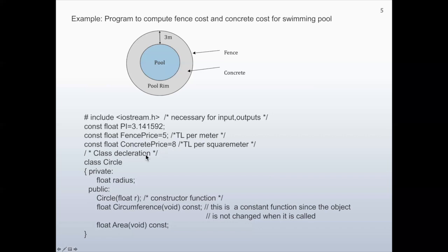In the class declaration, we first write the name of the class — circle. The keyword class is a reserved word, followed by the name of the class. In the private part, we have radius, which is a floating number representing the radius of the pool. In the public part, we have circle — this is the constructor. It has the same name as the class. As input, we are given the value r, which is going to be assigned as the value of radius in the constructor.